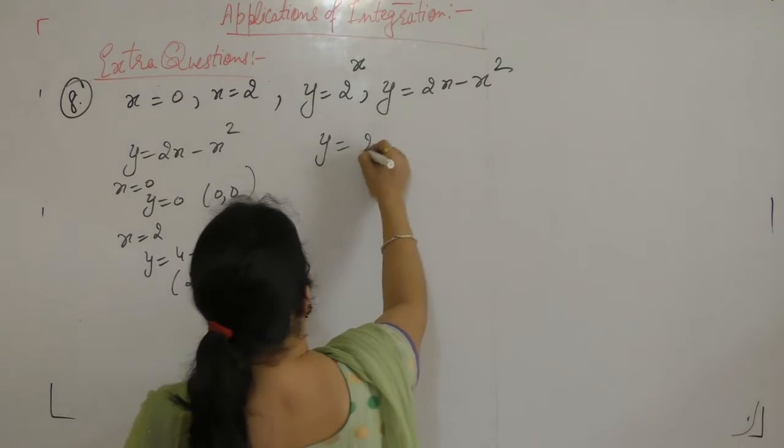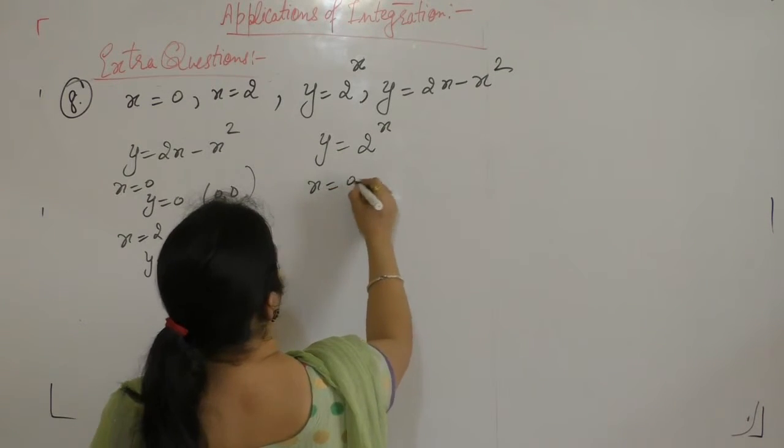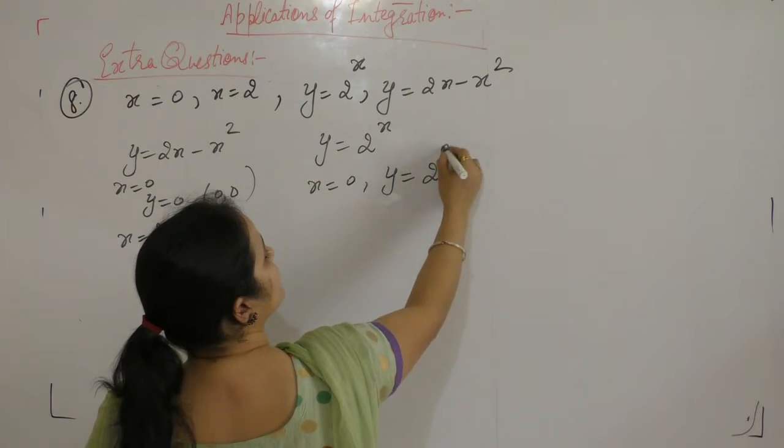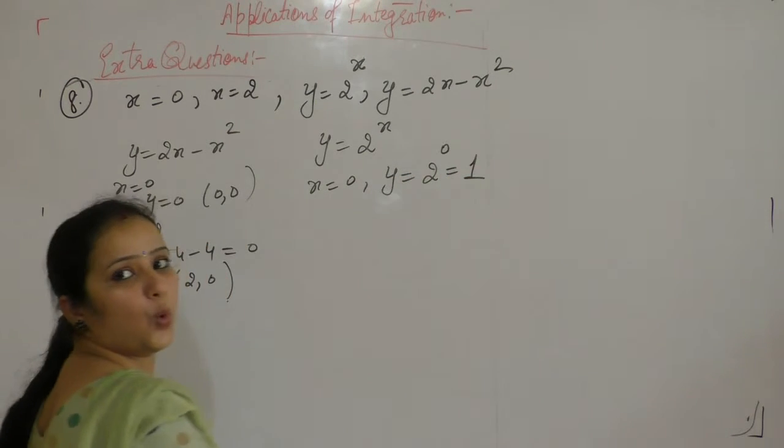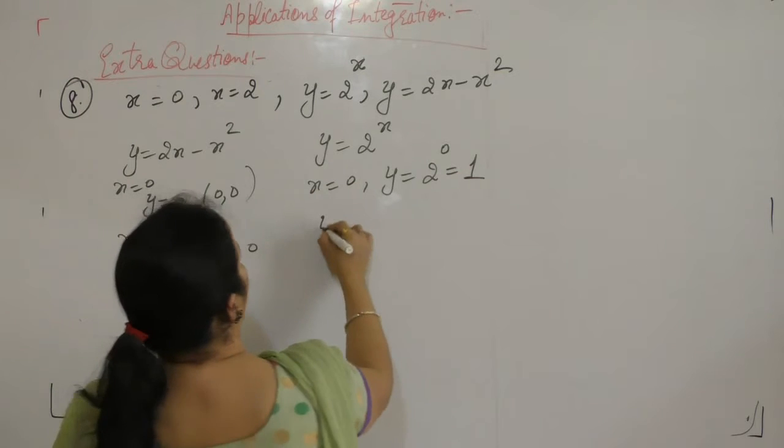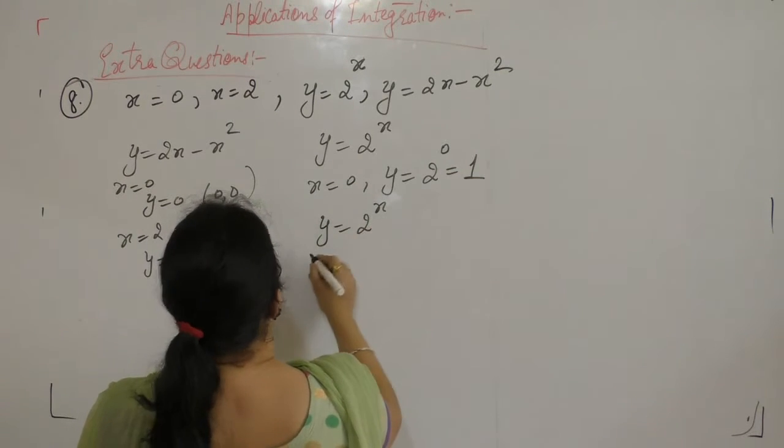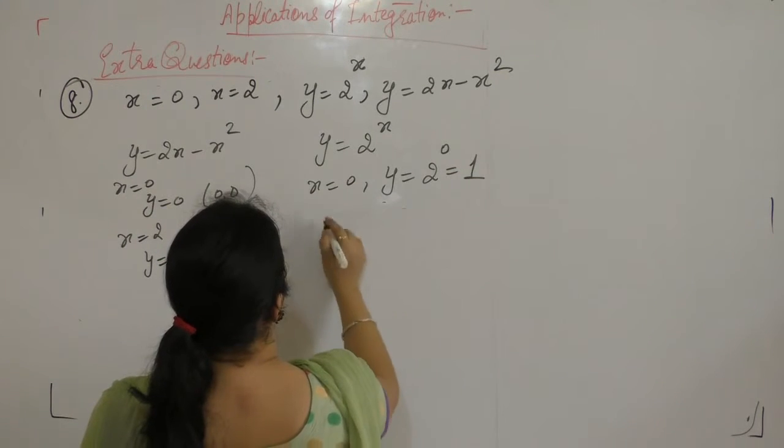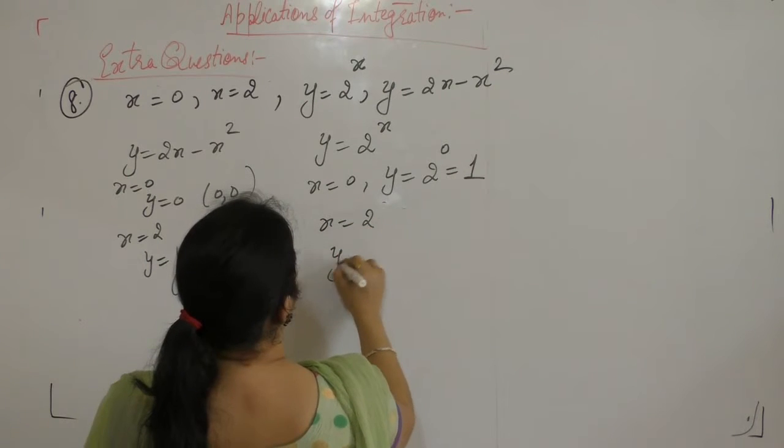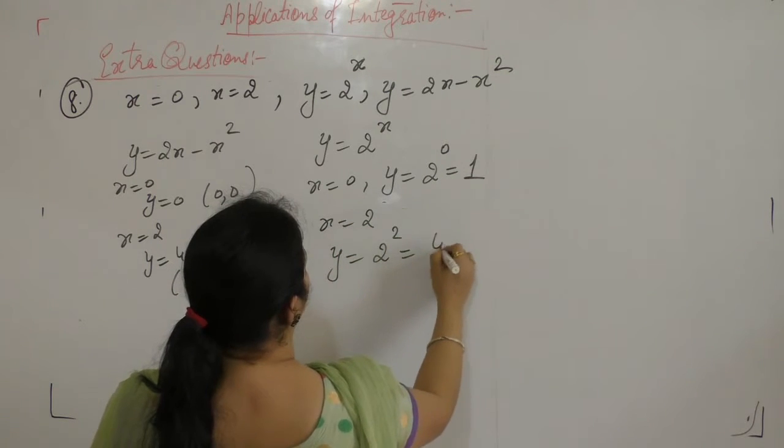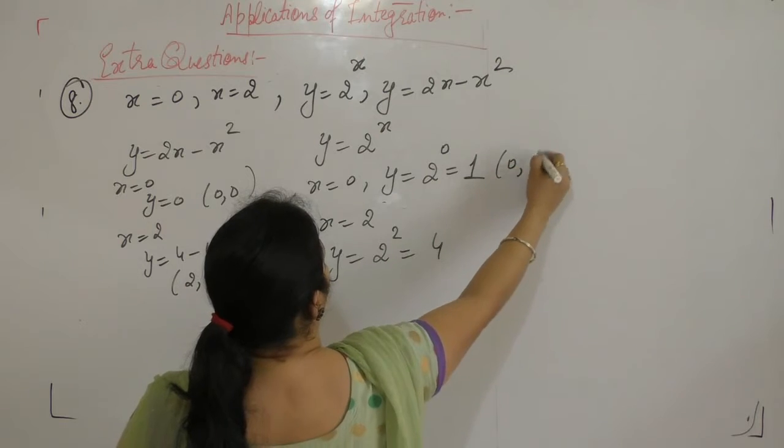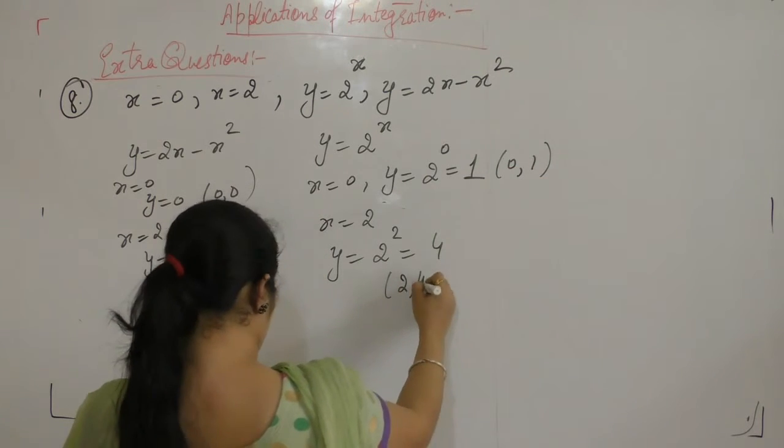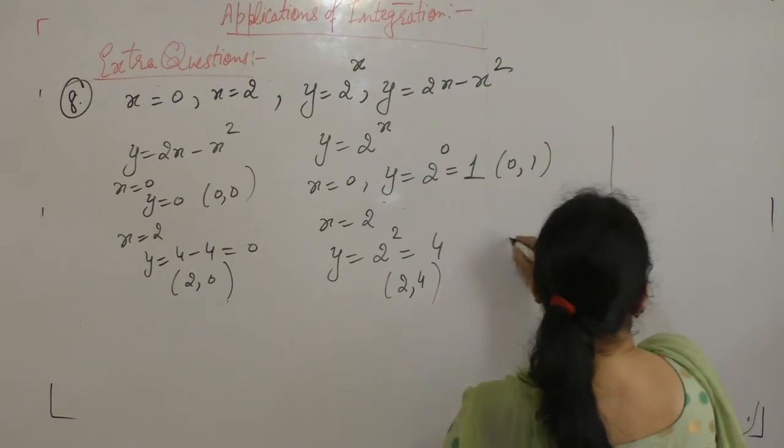y is equal to 2 power x, when x is 0, something power 0 is equal to 1. Now y is equal to 2 power x, when x is equal to 2, y is equal to 2 square, 4. So 0, 1, and 2, 4.